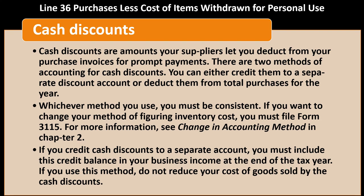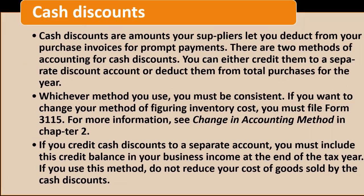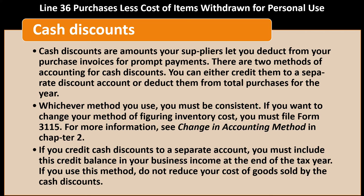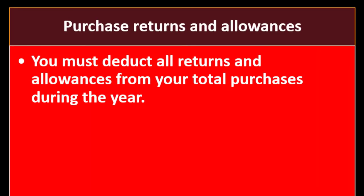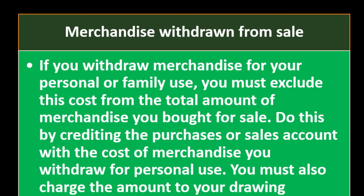For more information on changing accounting method, see Chapter 2. Purchase returns and allowances: if inventory is returned, you must deduct all returns and allowances from your total purchases during the year — reduce returns and allowances from purchases. Merchandise withdrawal for personal use: if you withdraw merchandise for personal or family use, you must exclude this cost from the total merchandise bought for sale by crediting the purchase account with the cost of merchandise withdrawn for personal use.